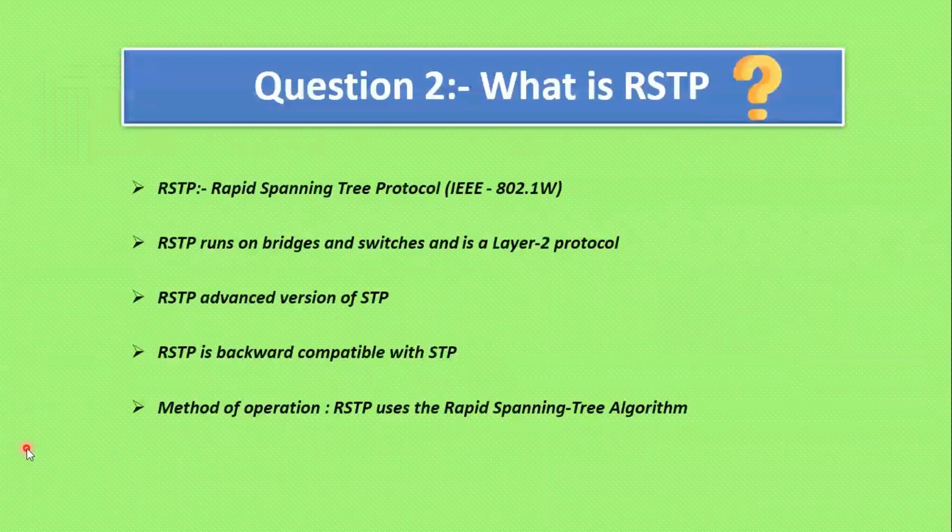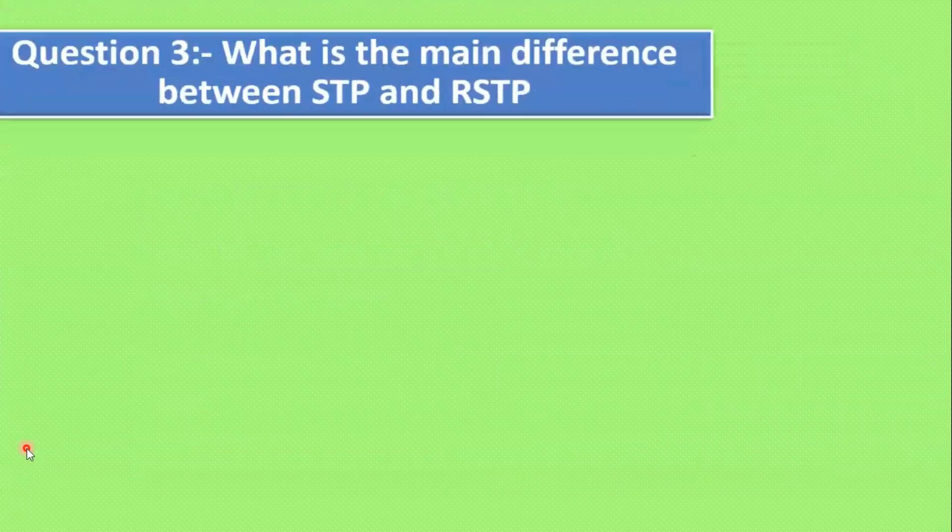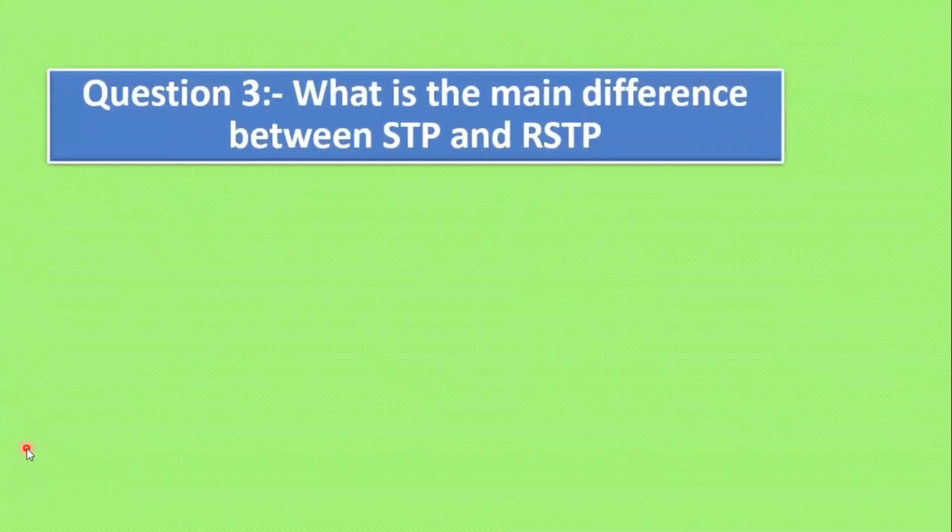RSTP uses the Rapid Spanning Tree Algorithm to create the topology. Another advantage is efficiency — RSTP is more efficient than STP. It can detect a loop in the network faster, preventing potential network failures. That is why we say RSTP is more efficient.